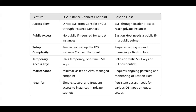The EC2 Instance Connect Endpoint is the best choice for simple, secure, and frequent access to instances in a private subnet. However, a bastion host is still needed for persistent access requirements, a wider variety of OS types, or legacy setups where the EC2 Instance Connect package cannot be installed.